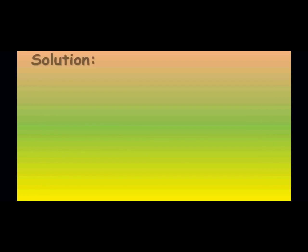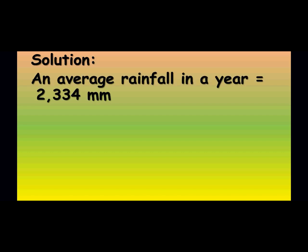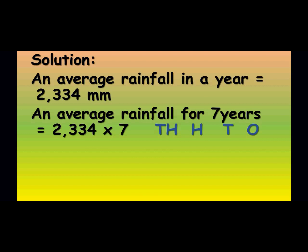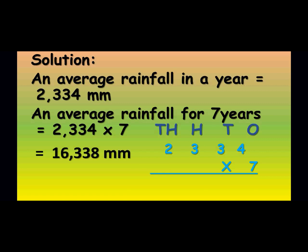So 2334 into 7 — if you multiply it, you will get the product. Children, take your classwork and start writing simultaneously. An average rainfall in one year is 2334 mm. Multiply 2334 into 7 and you will get the answer as 16,338. Till here we had learned it in the last class.